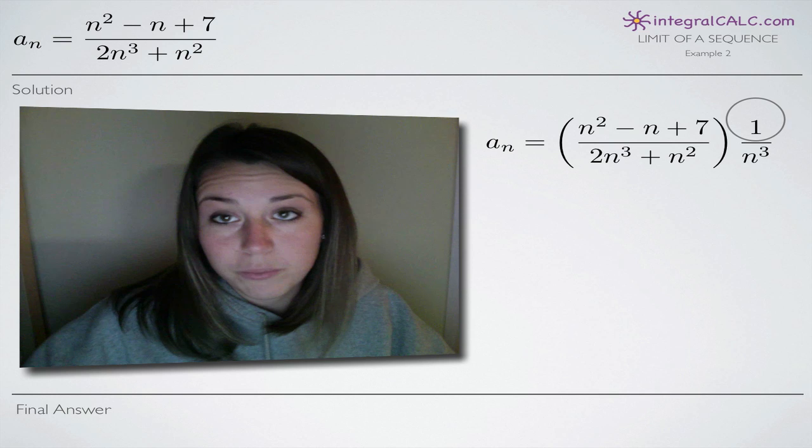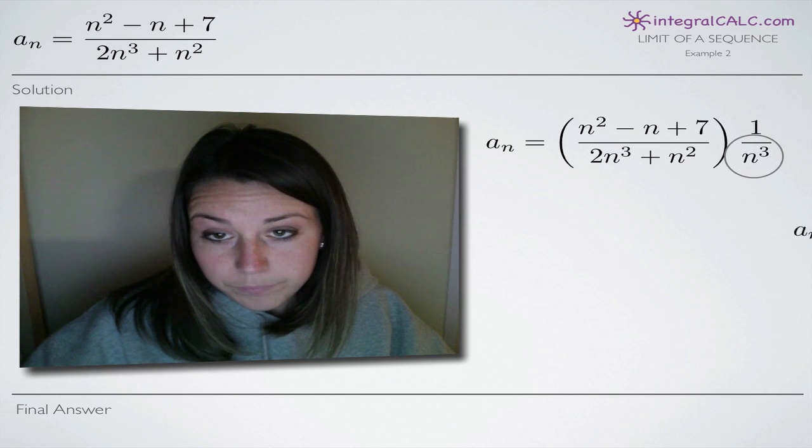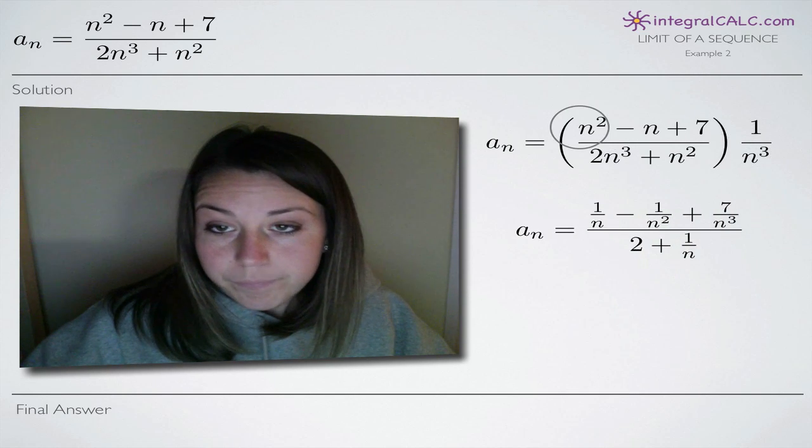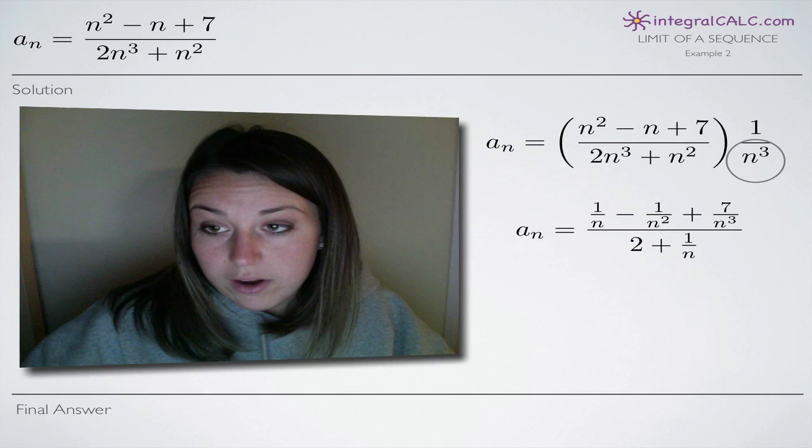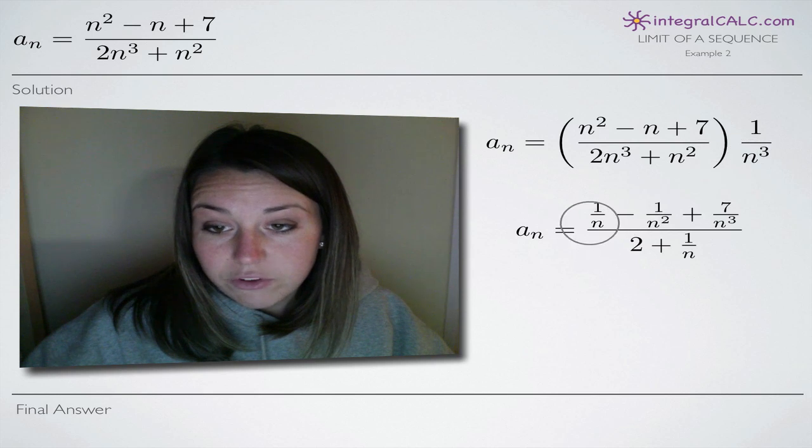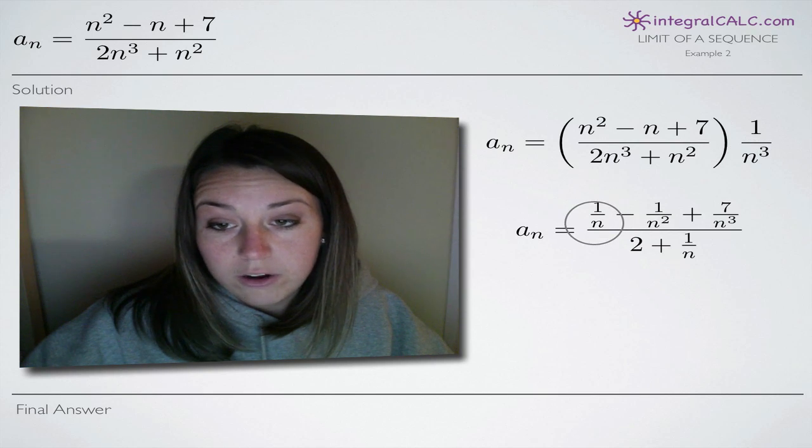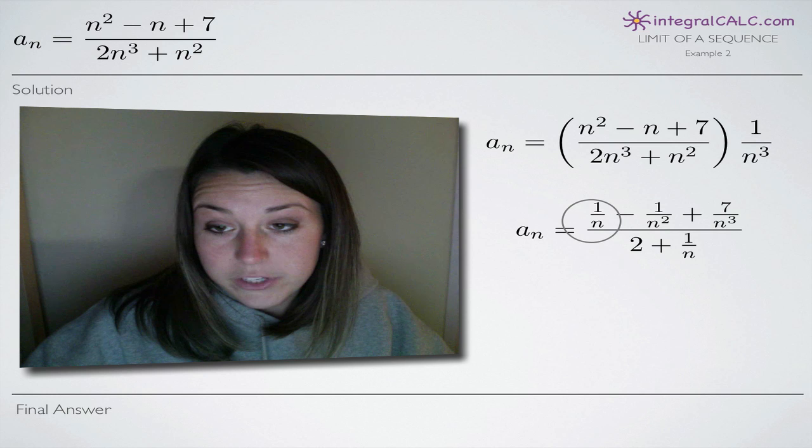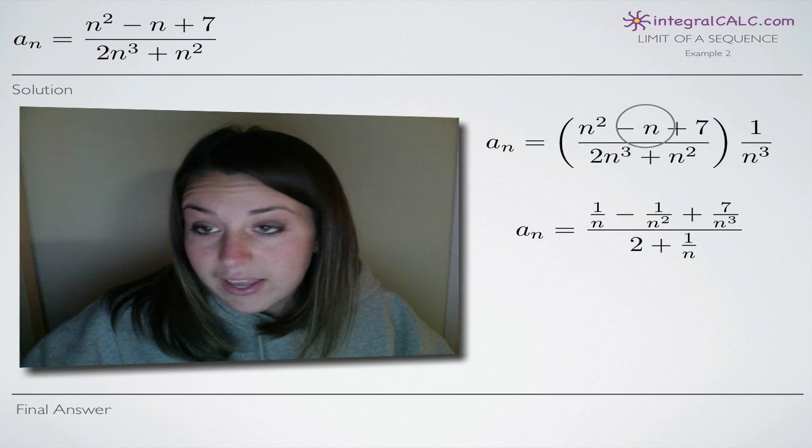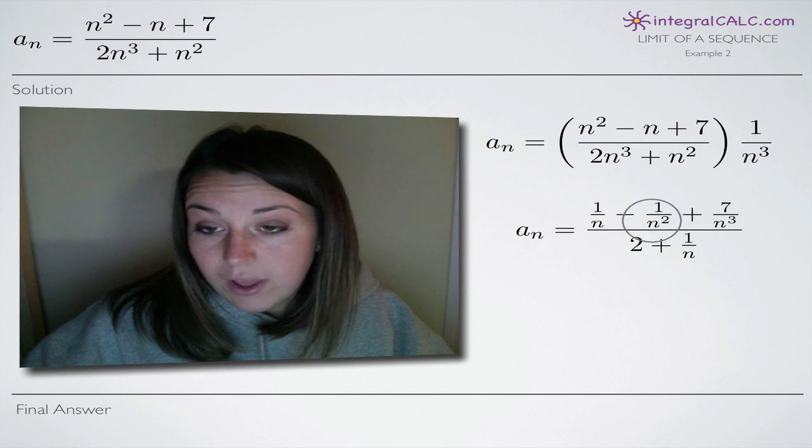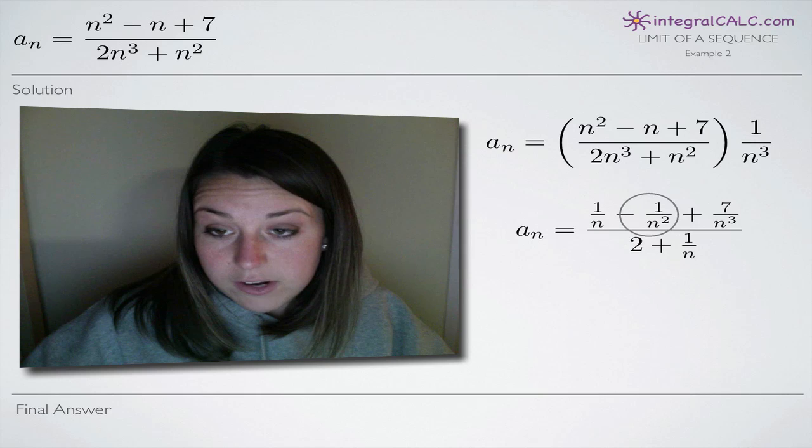So it's the same thing as multiplying by 1 divided by n cubed. So when we do that, we'll take n squared and we'll divide by n cubed. That'll leave us with just 1 over n in the denominator of that particular term. We will take n and divide it by n cubed and we'll end up with n squared in our denominator here.